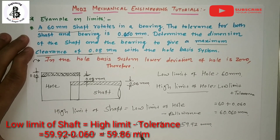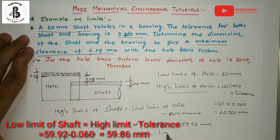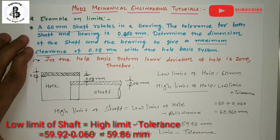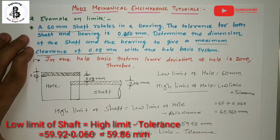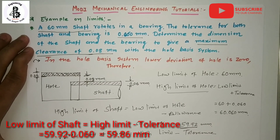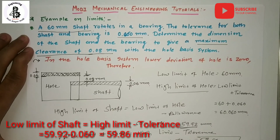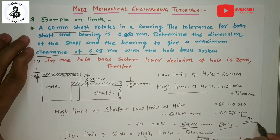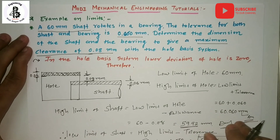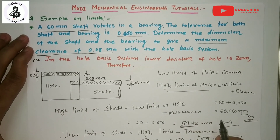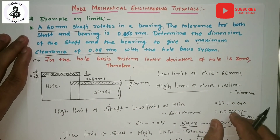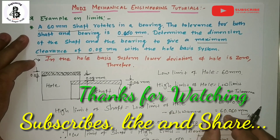For the low limit of the shaft, we calculate from the high limit minus tolerance: 59.92 minus 0.060 = 59.86mm. So the final answers are: hole — 60mm to 60.060mm; shaft — 59.86mm to 59.92mm. That is how you calculate the dimensions to give a maximum clearance of 0.08mm with the hole basis system. Please subscribe and share for more mechanical engineering tutorials.